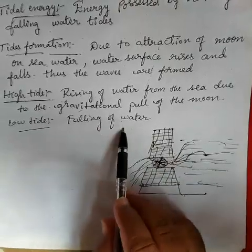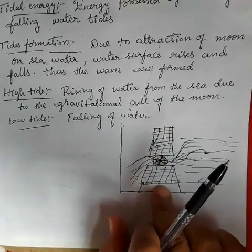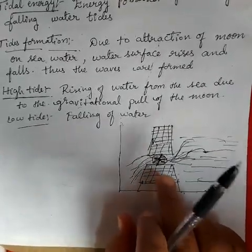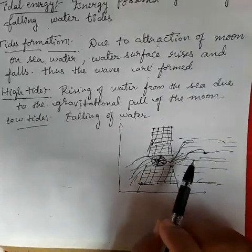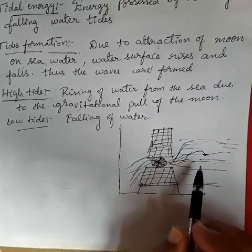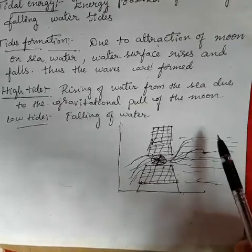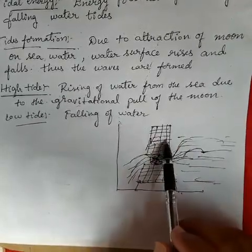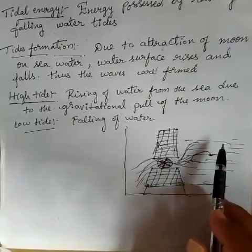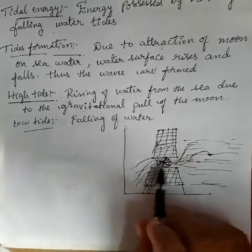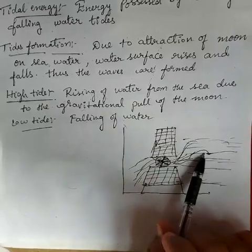But in all places this cannot be constructed — this is a limitation. In few places we can build it up, because not all places have high tides always. Also sometimes very high tides can damage the barrier and the turbine. That is why it cannot be constructed in all places — only in some places it can be constructed.